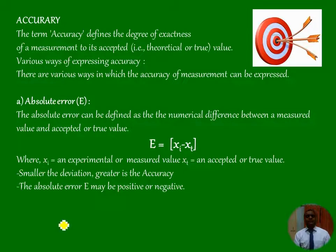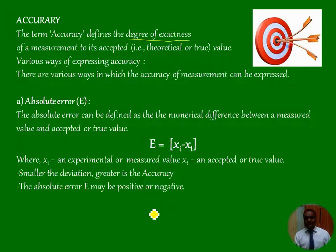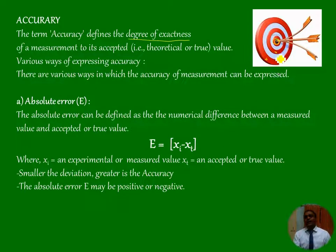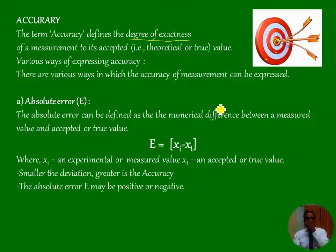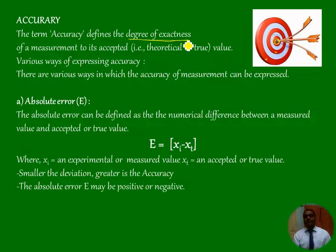Accuracy of any method is defined as the degree of exactness — how much you are near to the true value. For example, in this image, this is a true value, and whenever you hit near the center it is said to have good accuracy. That means accuracy defines the degree of exactness: how exactly you are giving the right data, how exactly you are getting a particular measurement.